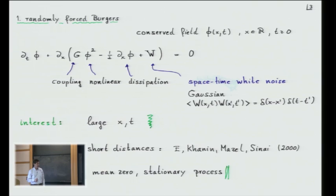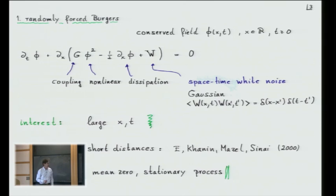What does it mean to be called a conserved field? It's because it satisfies the conservation law. Here is the one-dimensional conservation law: the time change of phi is equal to the derivative of the current. The current has three pieces: a nonlinear piece, a dissipative piece which wants to make it smooth, and the noise.